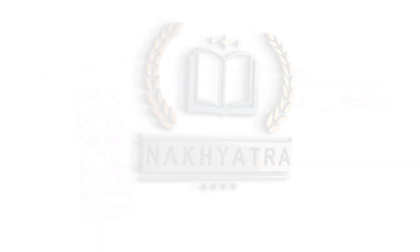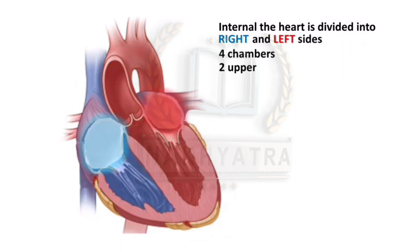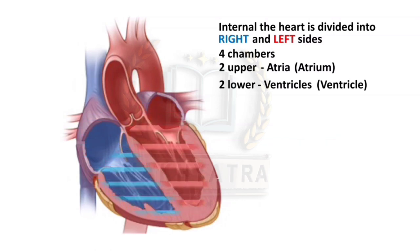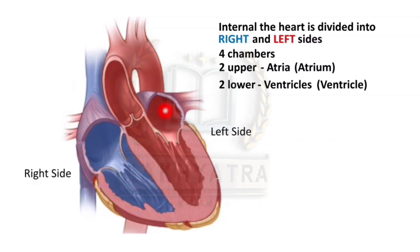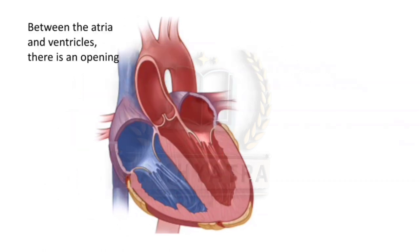The weight of the heart is about 360 grams. Internally, the heart is divided into right and left sides and has four chambers — two upper and two lower. The two upper chambers are called atria (singular: atrium) and the two lower chambers are called ventricles. This is the right atrium, right ventricle, left atrium, and left ventricle.